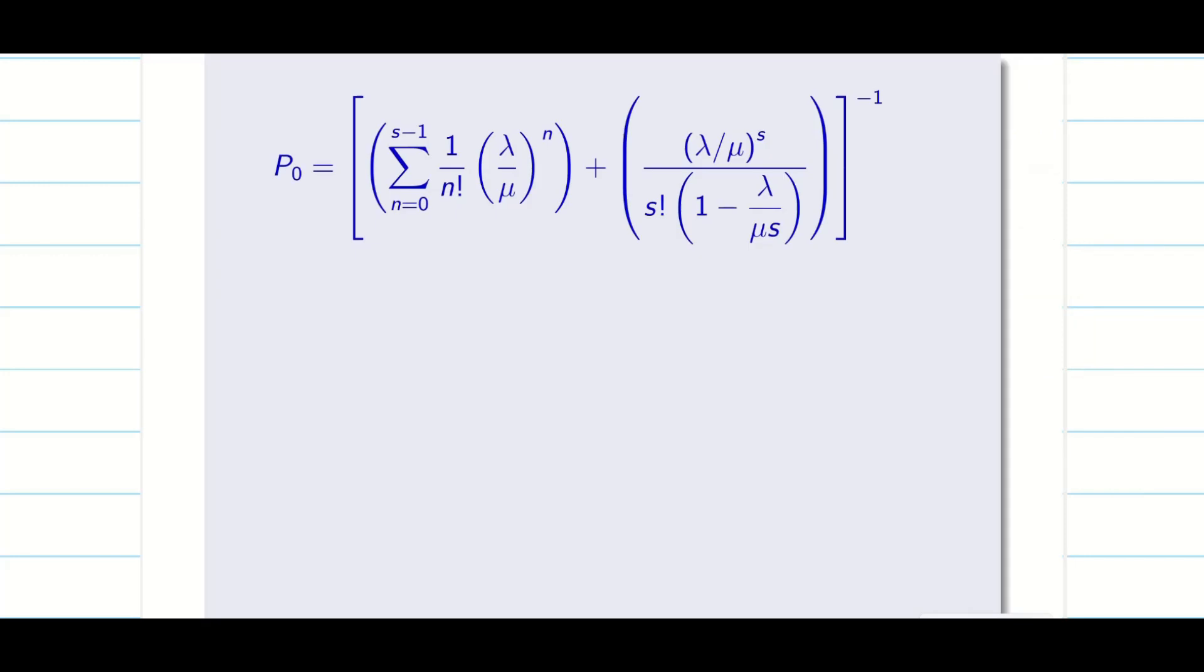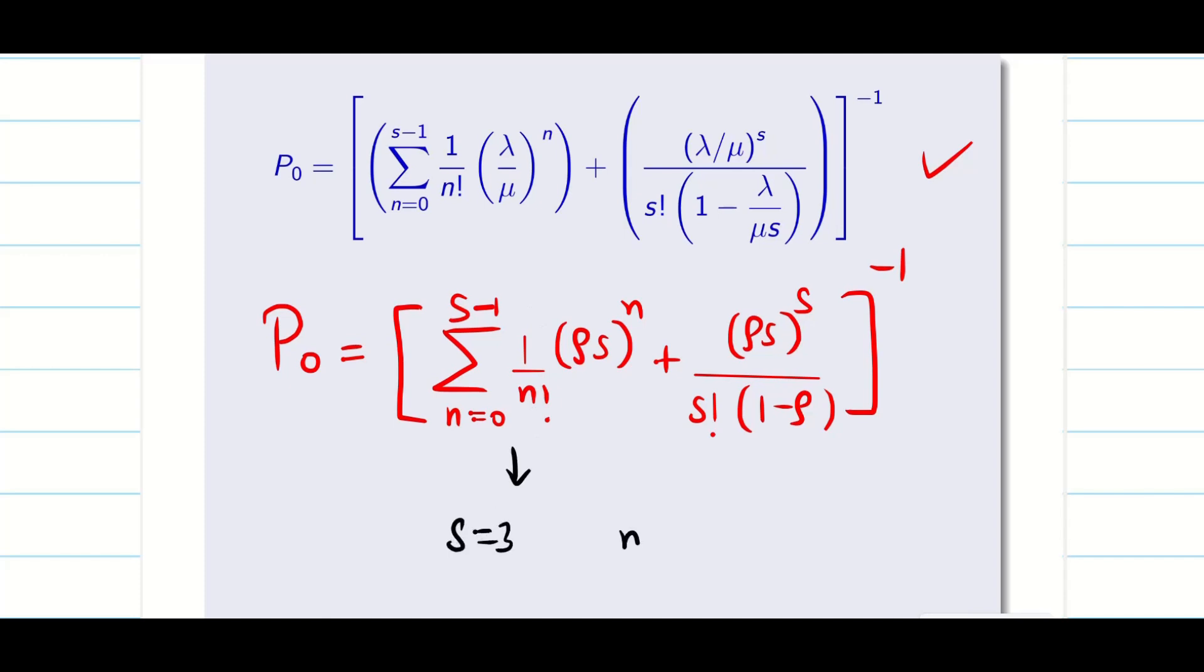First, as I said, whatever you do, we have to write P₀. From the P₀ only we are going to find all the data. You can use the formula n equals 0 to s minus 1 by n factorial rho s whole power n. Here rho s whole power s divided by s factorial into 1 minus rho. s is going to be 3. I am going to get the values of n as 0, 1, 2, because s minus 1 is going to be 3 minus 1, that is 2. You are going to substitute all the 3 values for this alone, not the whole term, only for this term alone, and then add it with this term.